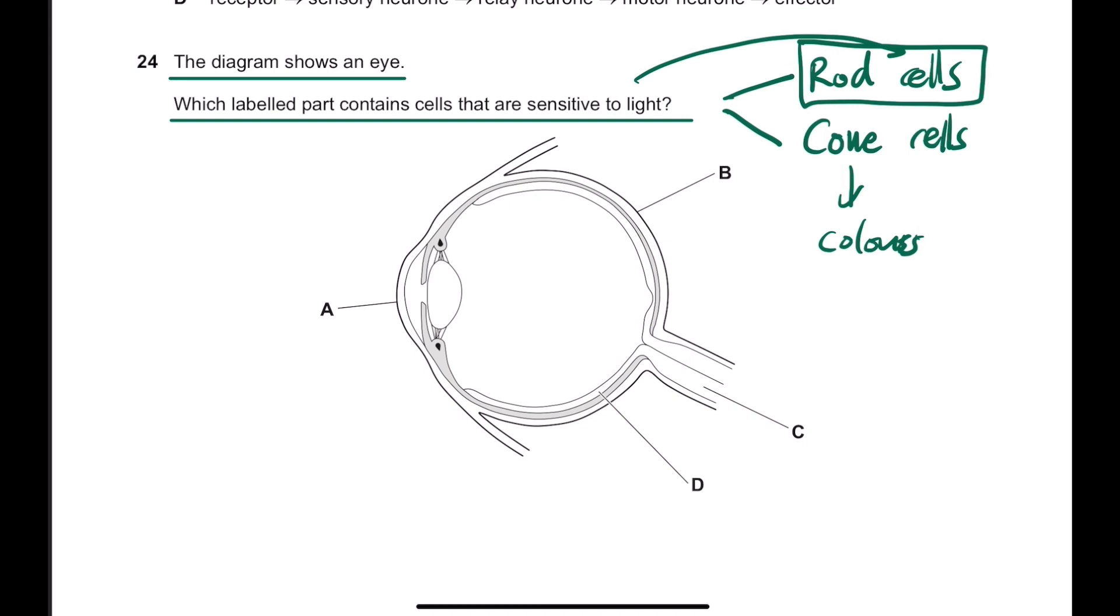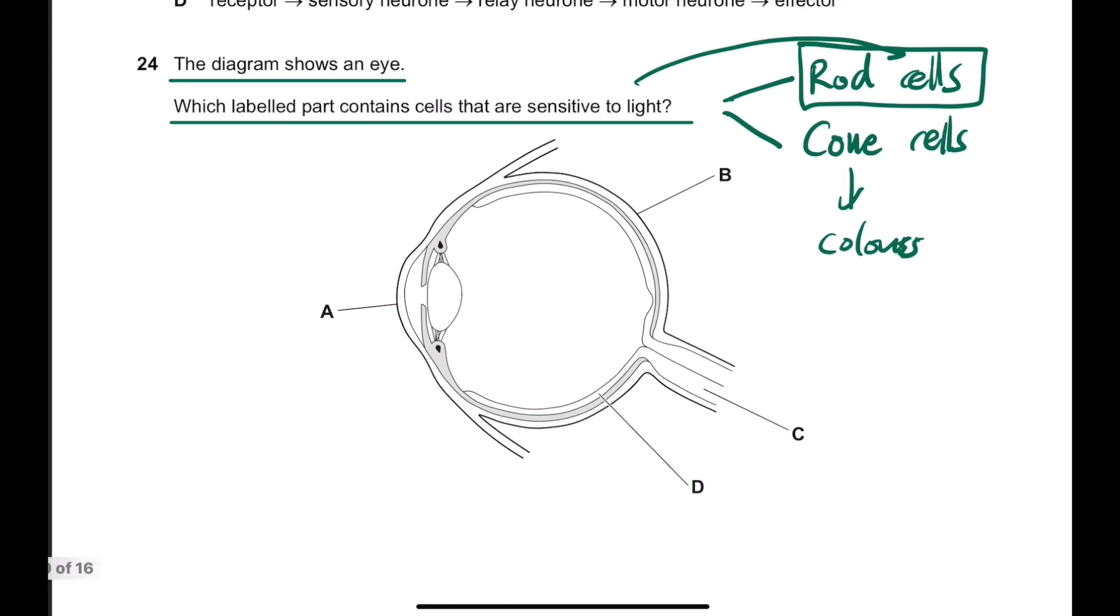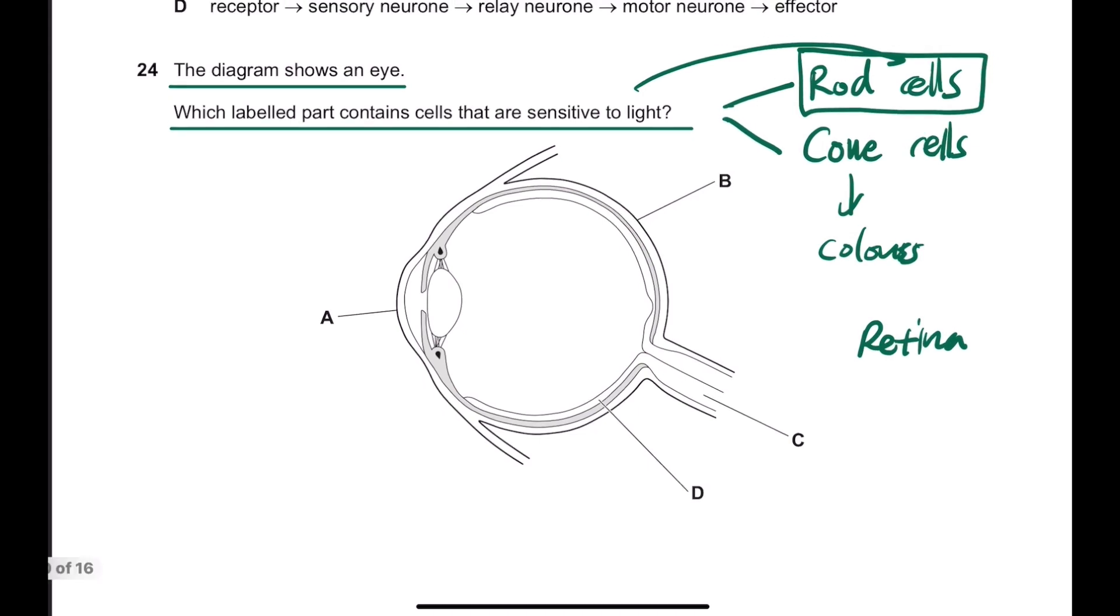So I'll try to find the layer or the portion called retina. The retina contains both rod cells and cone cells, and there's also another part called fovea, which only contains cones.